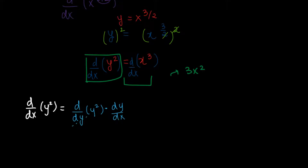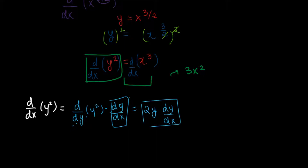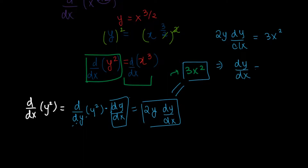We can think of it like canceling the dy, even though that's not the most accurate representation. This gives us the derivative of y squared with respect to y, which is 2y, times dy over dx. Setting left equal to right, we have 2y dy over dx is equal to 3x squared. That gives us dy over dx is equal to 3x squared divided by 2y.